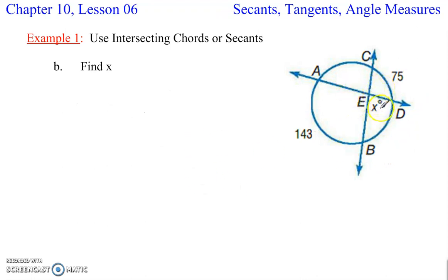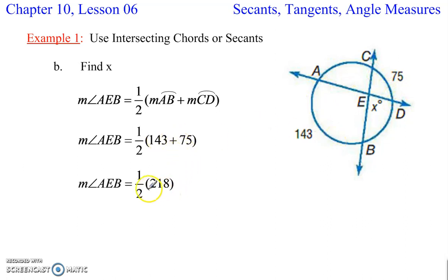Here we want to find x. Now notice that is not the angle that we would find with these right here, but that's not a problem. We can first find the average of these two, add them together, divide by 2, and that gives us 109 for this angle. And since this is on a line with those, we subtract that from 180, and we get x is 71.